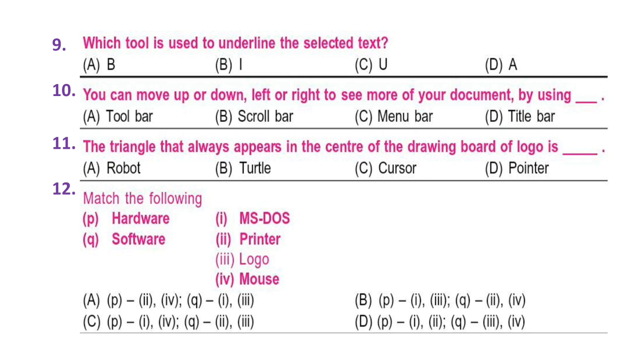Question 10: You can move up or down, left or right to see more of your document by using: A. Tool bar, B. Scroll bar, C. Menu bar, or D. Title bar. Question 11: The triangle that always appears in the center of the drawing board of Logo is: A. Robot, B. Turtle, C. Cursor, or D. Pointer.